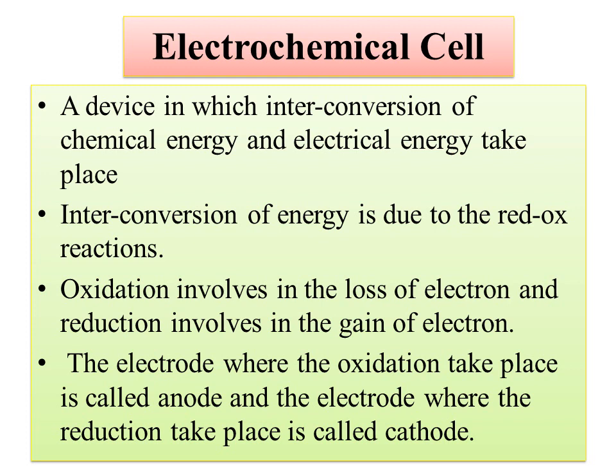Oxidation takes place at the anode, and reduction takes place at the cathode. Oxidation involves loss of electrons, and reduction is the gain of electrons. We use anode and cathode: oxidation and loss of electrons at the anode, reduction and gain of electrons at the cathode.